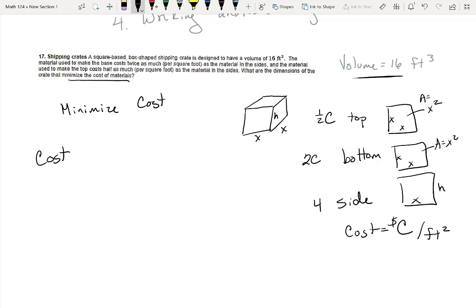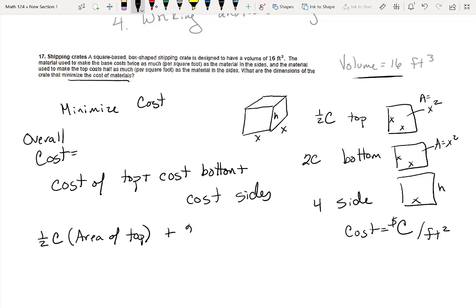So I want to make an equation for overall cost. I really have the cost of the top plus cost of the bottom plus cost of the sides, right? So the cost of the top should be 1 half times whatever the price is times the area of the top. And the cost of the bottom should be 2 times whatever the cost is times the area of the bottom.